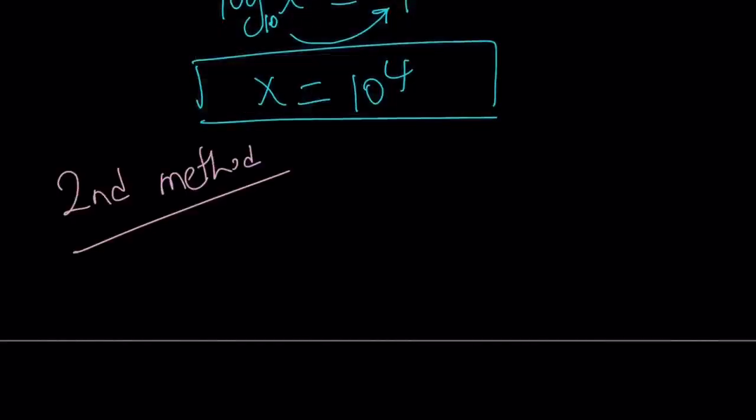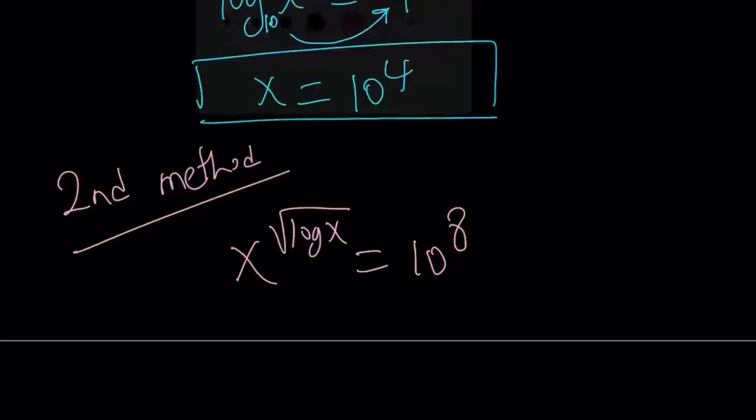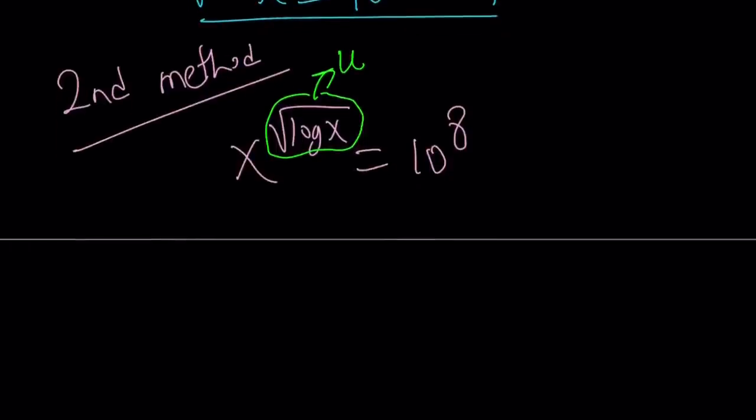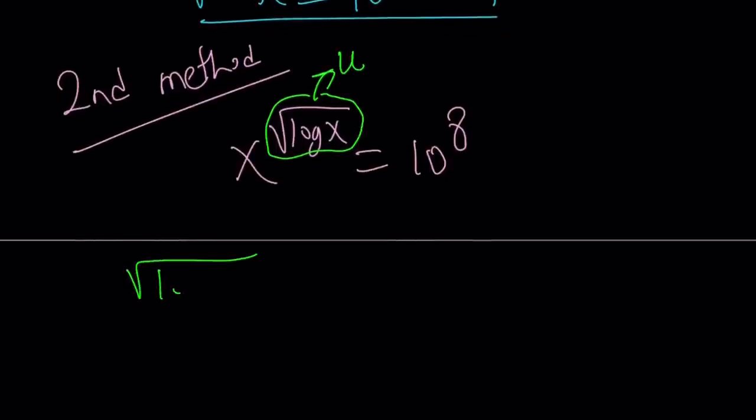My second method is very similar to the first method because we're solving the same problem, but it's kind of different too. How? We're going to use substitution, and substitution is fun. So let's go ahead and take this confusing expression and call it something. How about calling that u? So now we called log x square root of log x equals u. This implies log x equals u squared.